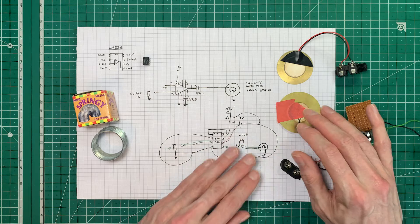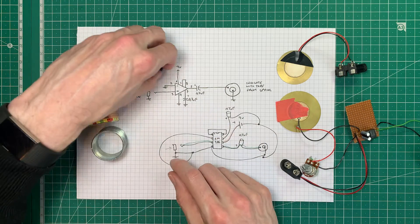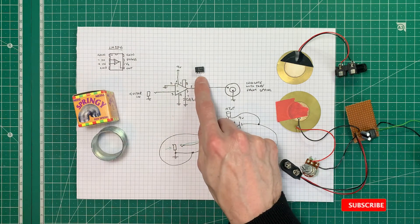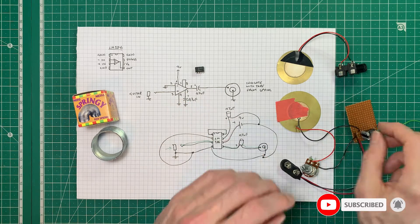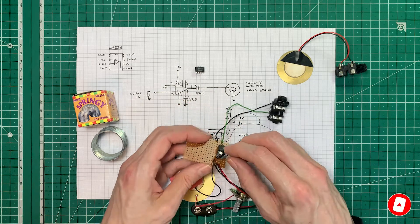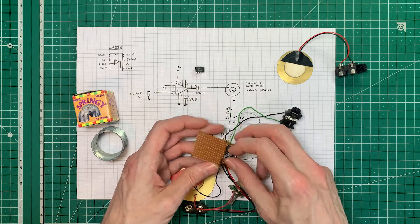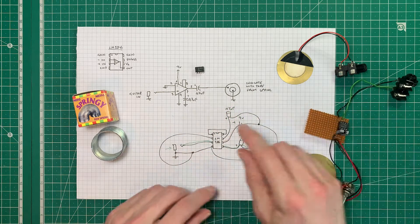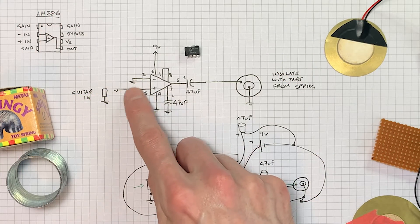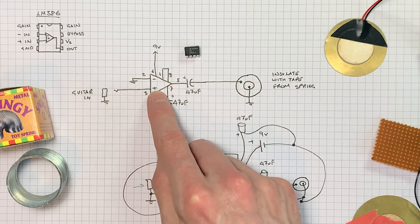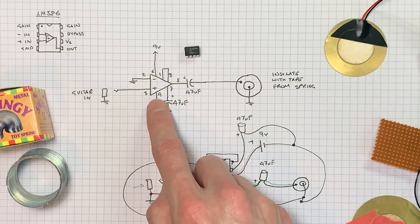So how have I got mine set up? So first of all I'm sending my guitar into the 386 chip and this is set up in its most basic configuration which only requires, as you can see here, two capacitors and these are both 47 microfarads. So the inverting input is connected to ground, the guitar is going into the non-inverting input, then I've got my nine volts and ground for the battery connected to pins six and four.